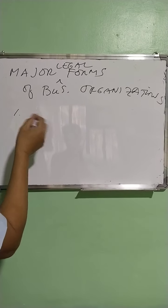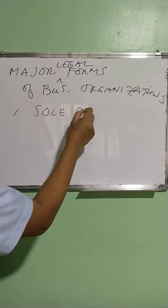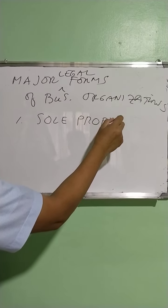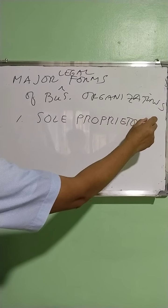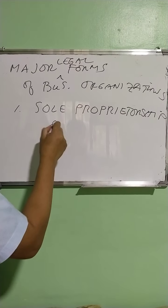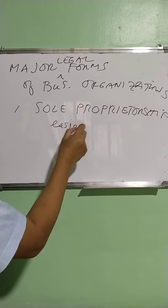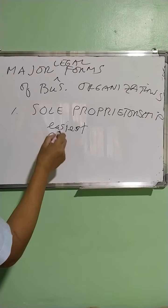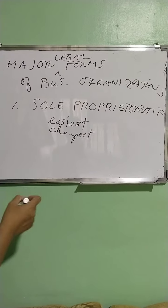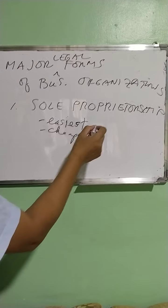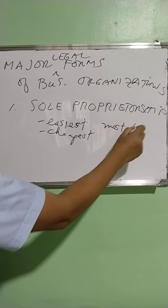The first major legal form is what we call sole proprietorship, wherein you are the manager, the boss, and the owner of your own business. This one is the easiest to form, the cheapest to form, and the most flexible.